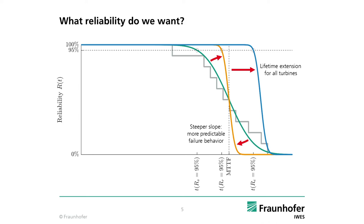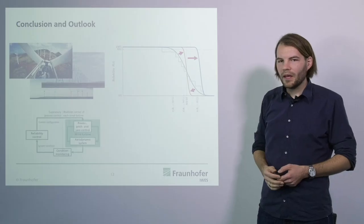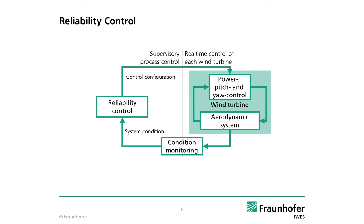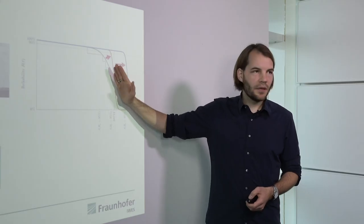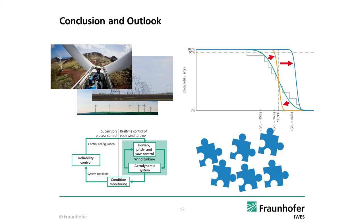And better operational planning. I have shown reliability control as a means to adjust these reliability curves such that our turbines actually fail at more precisely known times with higher energy yield. And I have shown the puzzle pieces that still need to be puzzled together and the individual aspects that we still need to work on.